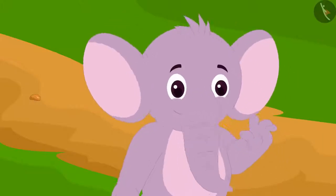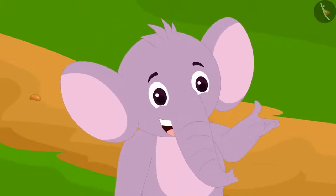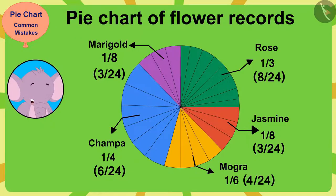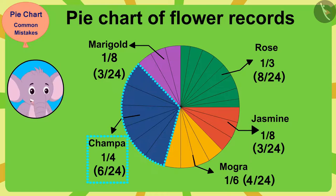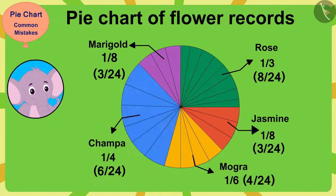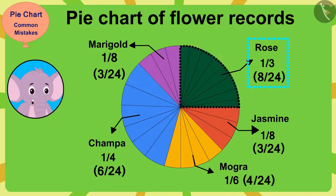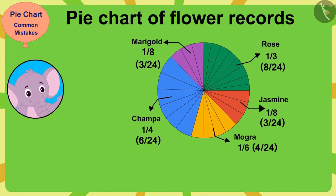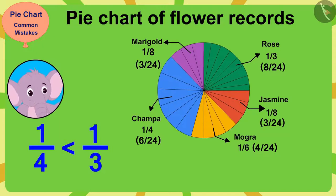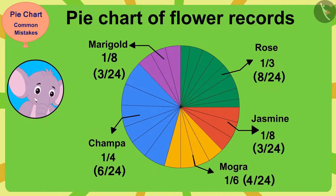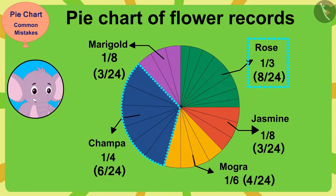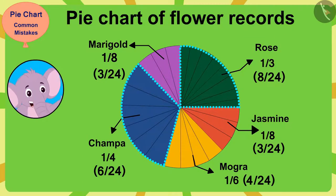Oh wow, Chanda, you have made a very beautiful pie chart. But, what's this? Champa flowers have been used in 1/4th of orders, and rose flowers have been used in 1/3rd of orders. And 1/4th is smaller than 1/3rd. But in your pie chart, the 1/4th part of the Champa flowers appears larger than the 1/3rd part of the rose flowers. How can this be possible?